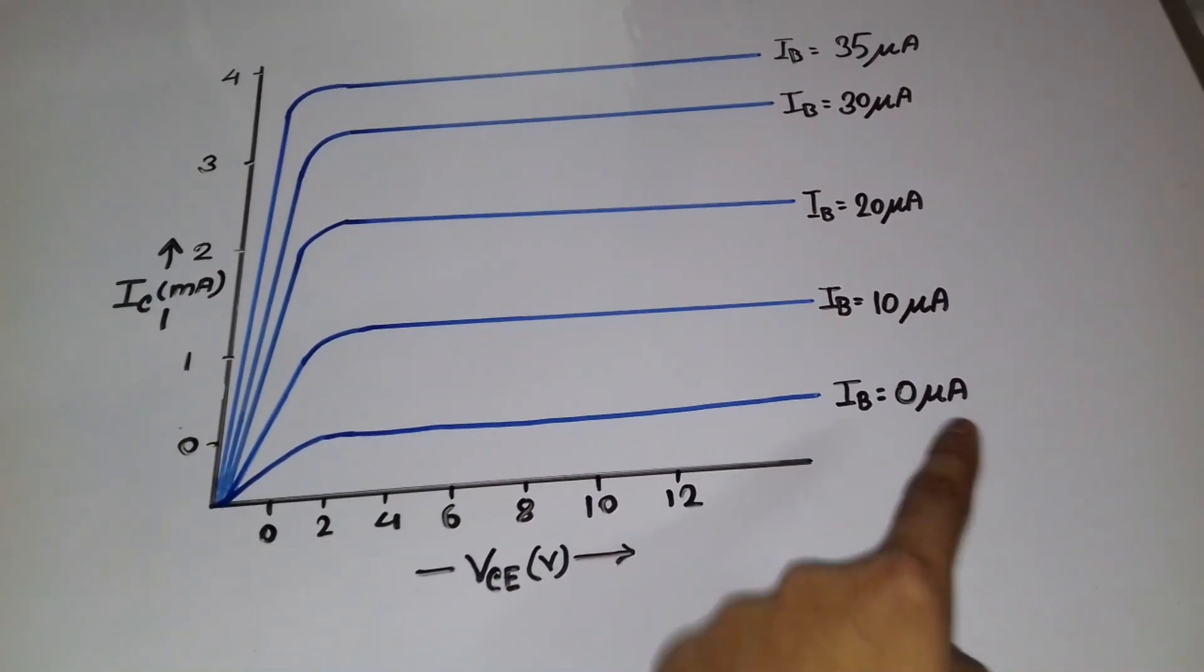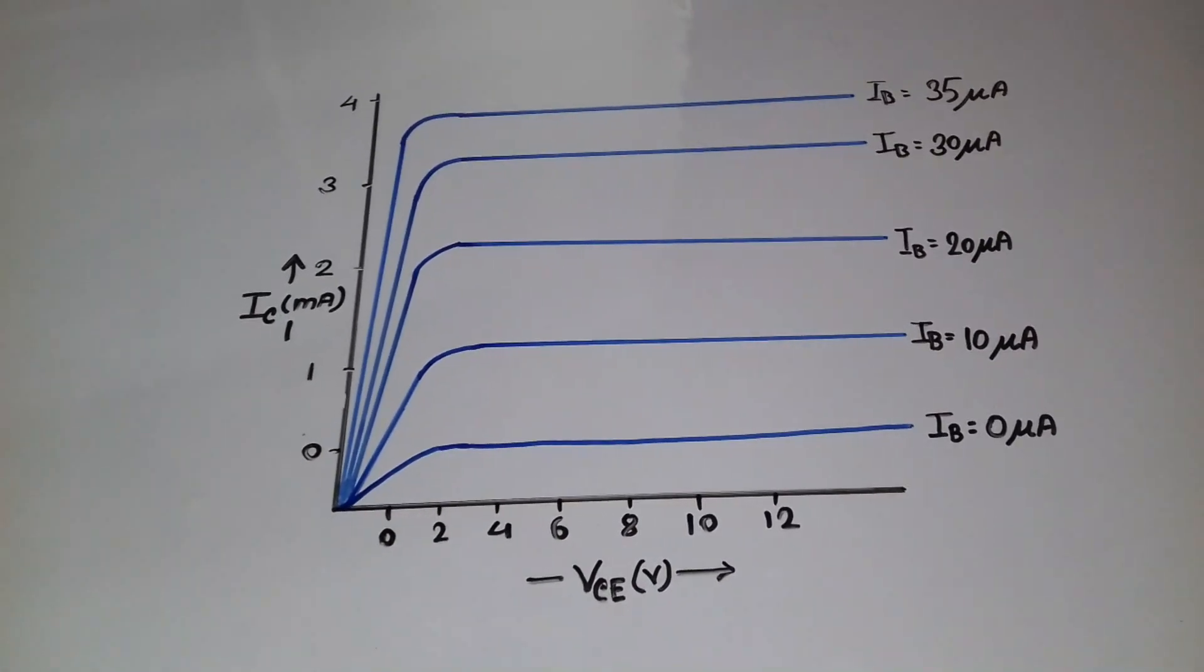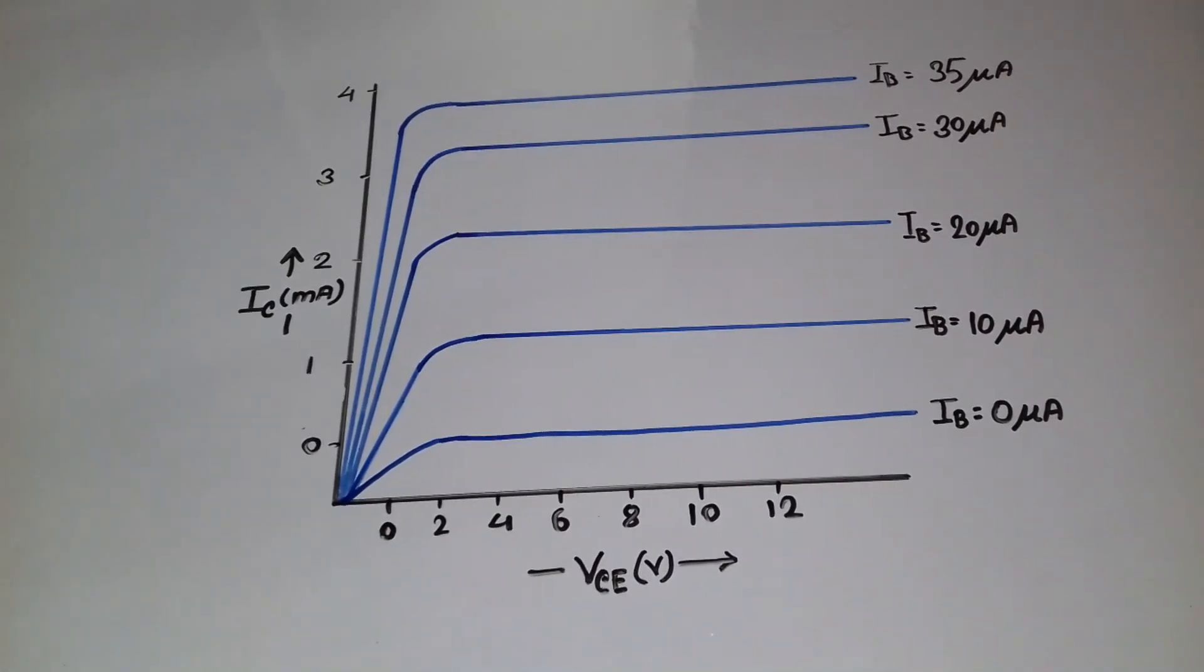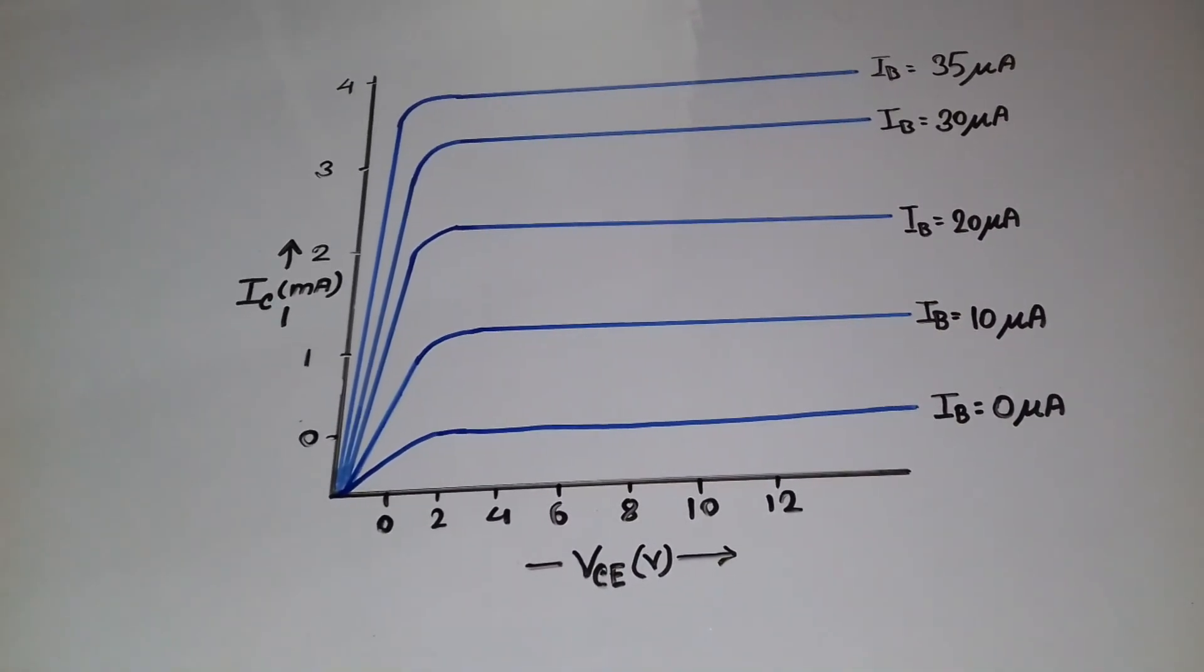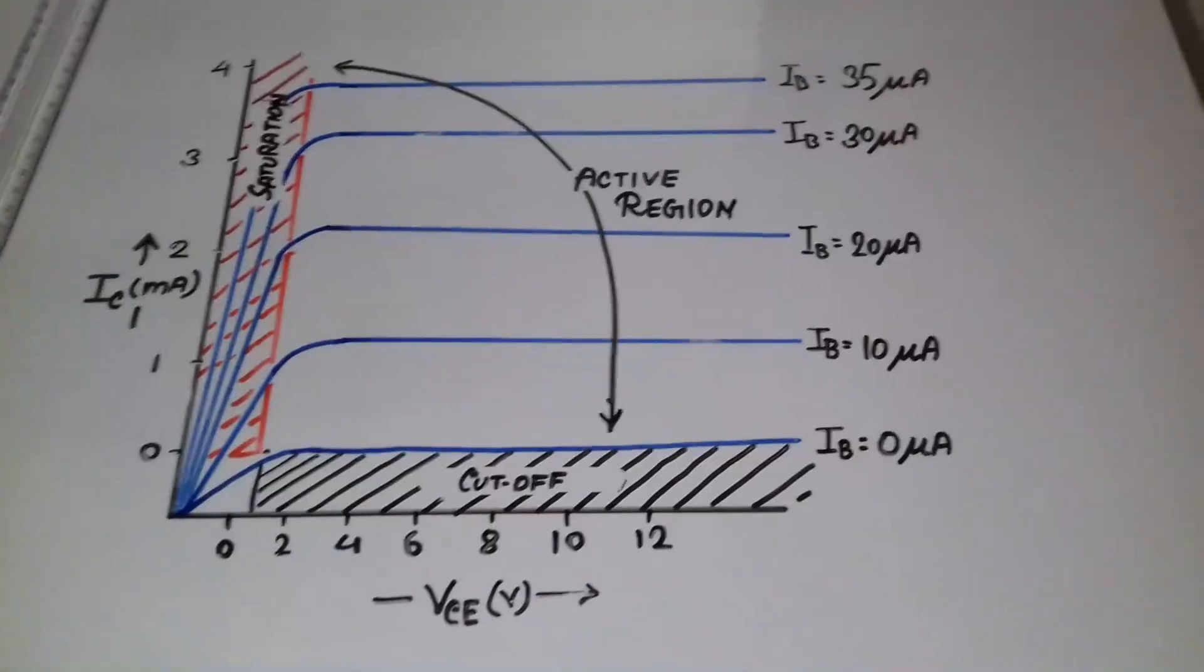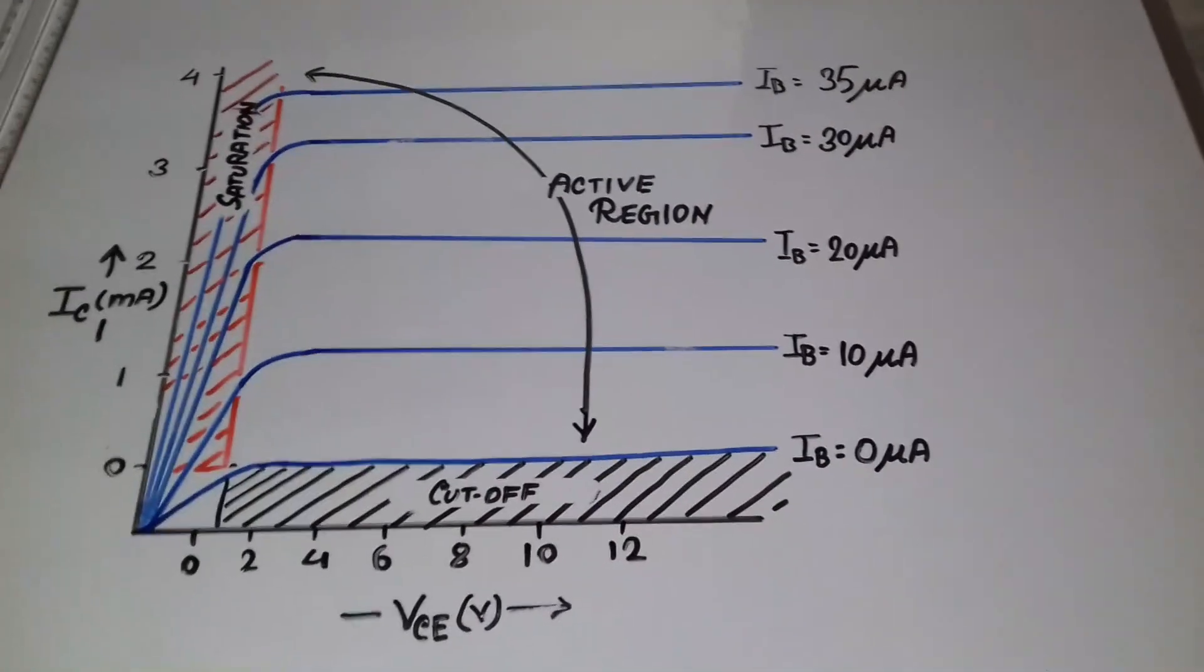And the IB values are scaled in microampere. And now if we look through this output characteristic curve, then three distinct regions will be visible. This region is the cutoff region, which is below the IB equal to 0 microampere.